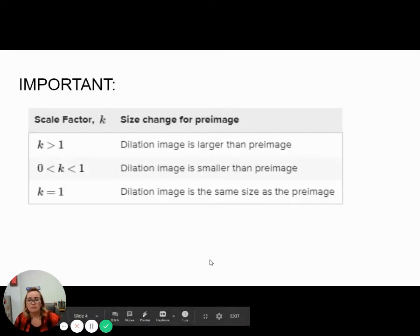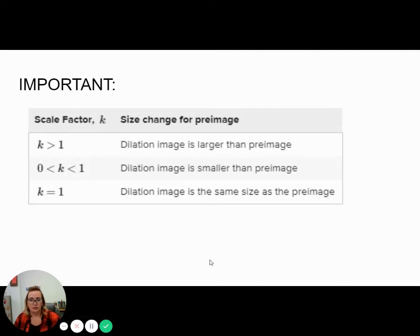So this is the important part of dilations. This is probably what I would put into your notes. You're going to start seeing a K, and K is scale factor. It tells us how we are changing our figure, how we're dilating. It tells you here that if K is larger than one, the dilation is going to be a larger image than the pre-image. If it's between zero and one, it's going to be smaller. And if it's one, it would be the same.